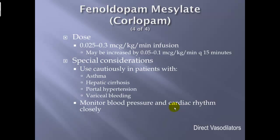Dose: 0.025 to 0.3 mcg/kg/minute infusion; may be increased by 0.05 to 0.1 mcg/kg/minute every 15 minutes. Special considerations: use cautiously in patients with asthma, hepatic cirrhosis, portal hypertension, or variceal bleeding/esophageal varices. Monitor blood pressure and cardiac rhythms very closely.